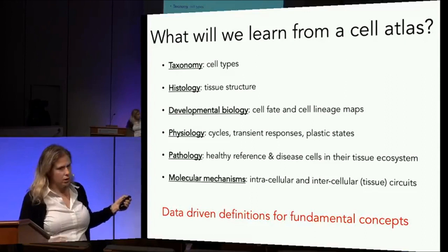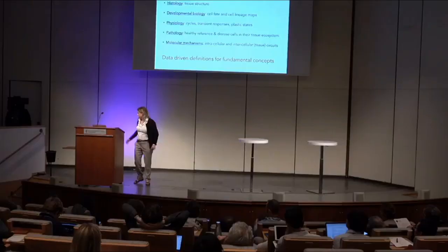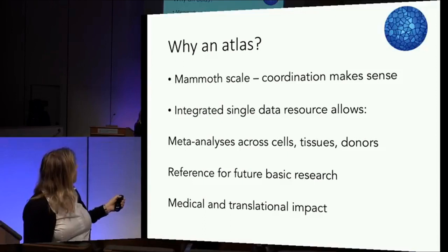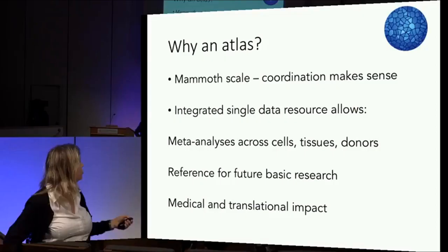What's so powerful about the concept of a human cell atlas is that we can now derive data-driven definitions for these fundamental concepts. The reason to do this as a consortium rather than individually is that achieving this for an entire organism comprehensively is a mammoth task. Coordinating across countries makes sense, and having an integrated single data resource will allow meta-analyses across tissues and donors, and will be an invaluable reference with medical and translational impact.